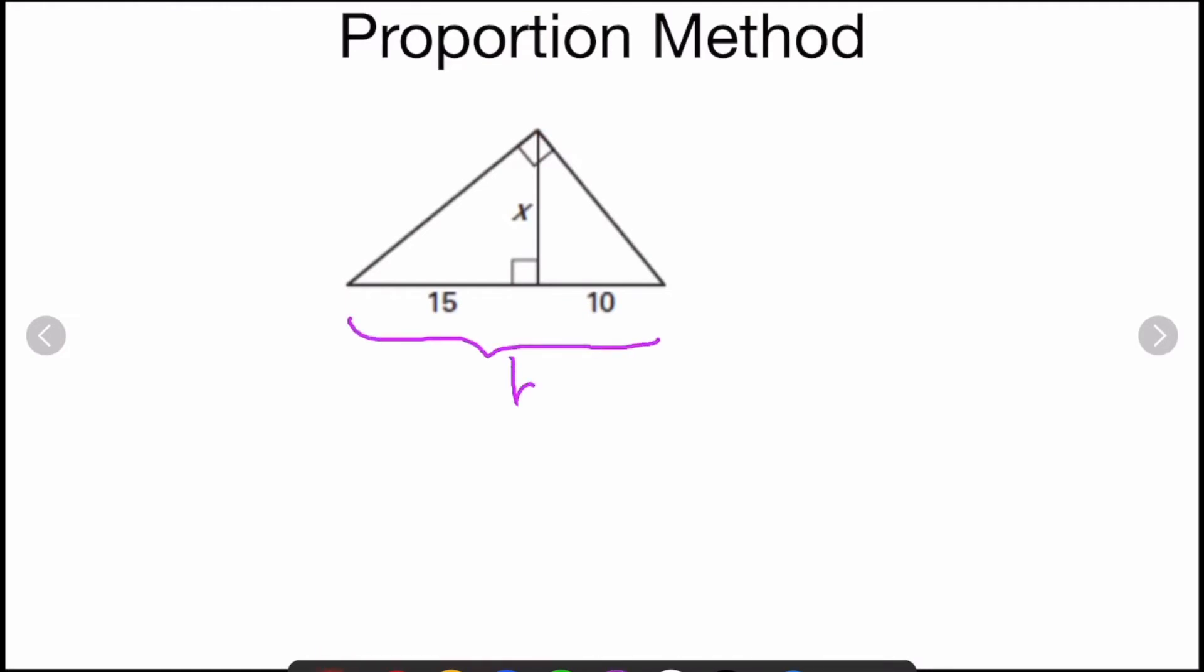There's the hypotenuse. That to me looks like the longer leg and that looks like the shorter leg. When we're in this medium sized triangle, the hypotenuse is always easiest. That's going to be the side opposite the right angle. It looks to me like the X is the shorter leg here and the 15 looks like the longer leg.